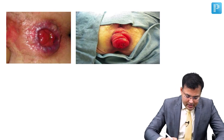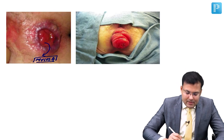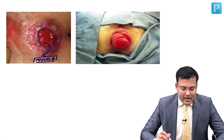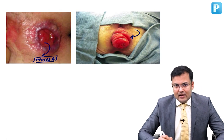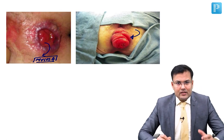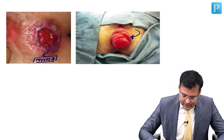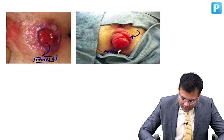In the first picture, there is prolapse of only mucosa, known as mucosal prolapse. Whenever there is prolapse of all three layers — mucosa, submucosa, and muscularis — when the whole thickness is coming out, this is known as full thickness prolapse. The second picture is of full thickness prolapse.